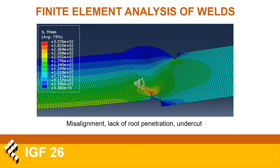This part of the presentation will focus on the results of the static analysis of the four initial models, starting with the combination shown on the slide — one of the misaligned welded joints. It is clear that the critical location in terms of stress concentration is located in the fusion line of the root weld due to its geometry.